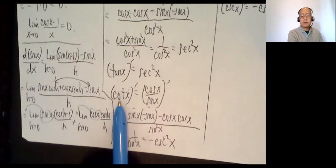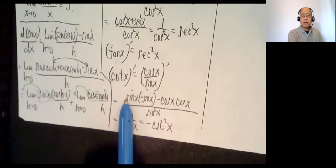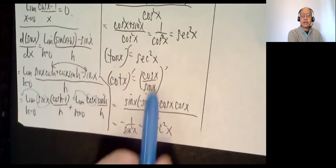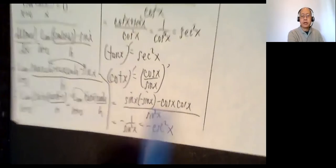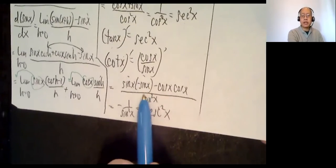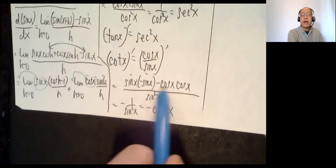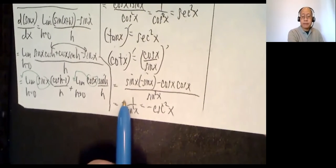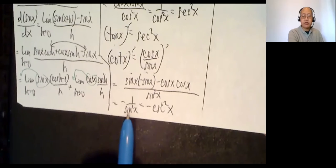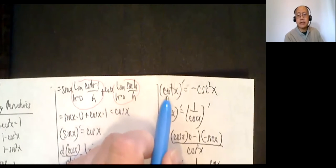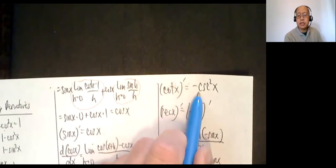Cotangent is cosine over sine. Bottom times derivative of the top — derivative of cosine is negative sine x — minus the top times the derivative of sine, which is cosine x. Over sine squared x. The top becomes negative sine squared x minus cosine squared x, which equals negative 1. So it's negative 1 over sine squared x, which is negative cosecant squared x. Derivative of cotangent is negative cosecant squared x.